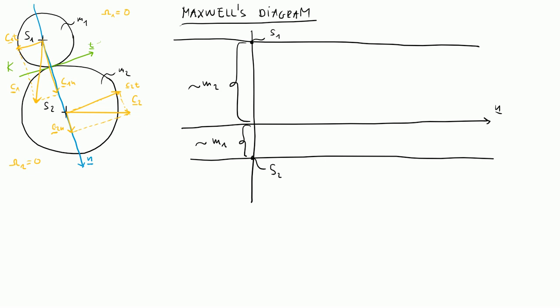We can then start placing the normal components C1N and C2N on this diagram, scaling these vectors such that C1N and C2N are properly represented. The next step is to draw a line between the two endpoints of C1N and C2N. This line will intersect our reference line, giving us the yellow line. This yellow line gives the magnitude of vector Csn, which is the normal velocity component of the common centroid of rigid bodies 1 and 2.